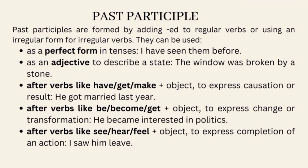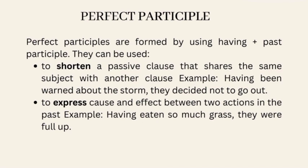Past participles can also be used after verbs like see/hear/feel plus object, to express completion of an action — 'I saw him leave.' Perfect participles are formed by using 'having' plus the past participle. They can be used to shorten a passive clause sharing the same subject — 'Having been warned about the storm, they decided not to go out.' And to express cause and effect between two past actions — 'Having eaten so much grass, they were full up.'